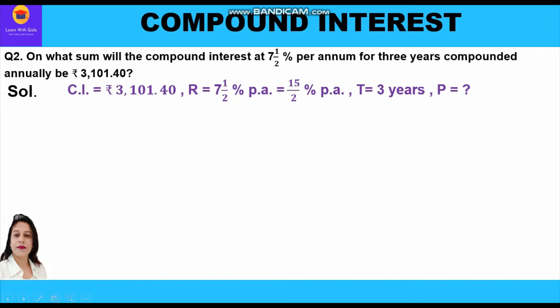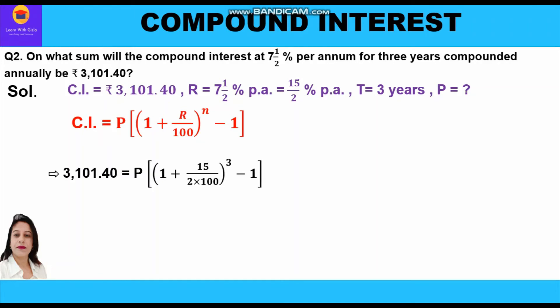Compound interest is rupees 3101.40. Rate of interest is 7 and a half percent per annum, which we convert to improper fraction: 7 into 2 is 14, 14 plus 1 is 15, so 15 by 2 percent per annum. Time period is three years. We have to find the sum, that is the principal. We apply the compound interest formula: CI equals P into bracket one plus R upon hundred, whole raised to power N, minus one.